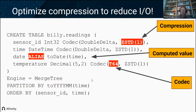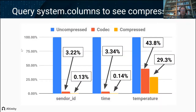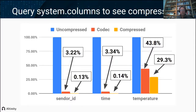The effect is phenomenal. There's a table called system.columns and as you dig into compression you want to get very familiar with it — it shows you the columns for all your tables and tells you what the compression levels are. For example, that sensor ID and time column, when we apply the codecs, we get down to basically close to a thousand-fold reduction in the size of the data. Temperature stored as decimal doesn't compress as well, but the point is this is one of the big reasons ClickHouse can do big scans so fast — the amount of data it's actually reading is very, very small.